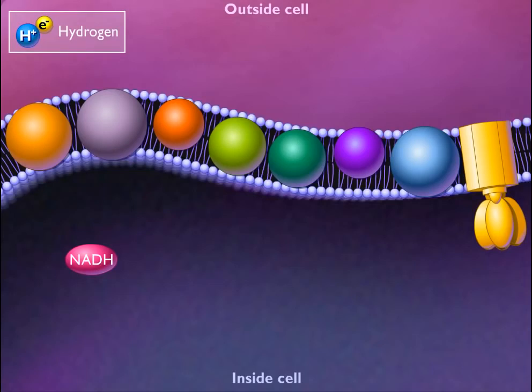The electron transport chain consists of a series of special electron carrier proteins that shuttle electrons from NADH to a terminal electron acceptor such as oxygen.